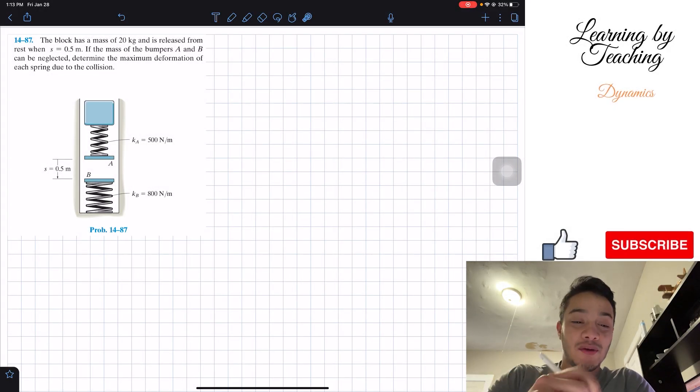Welcome back everyone to Learning by Teaching. Today we're in dynamics and we're going to solve problem 14.87. The block has a mass of 20 kilograms and is released from rest when s is equal to 0.5 meters. If the mass of the bumpers A and B can be neglected, determine the maximum deformation of each spring due to the collision.